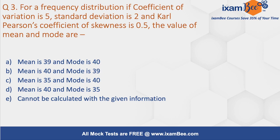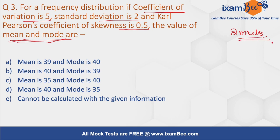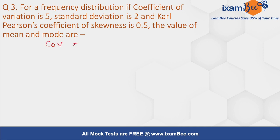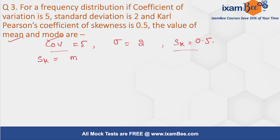Question 3: For a frequency distribution, the coefficient of variation is 5, standard deviation is 2, and Karl Pearson's coefficient of skewness is 0.5. We have to find the value for mean and mode. Since we need to find two variables, this question is important for two marks. We write down all the information and the formulas we can use. The formula for skewness is: coefficient of skewness equals mean minus mode upon standard deviation. Since both mean and mode are unknown, we cannot use this formula directly right now.